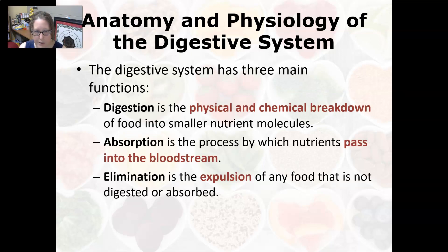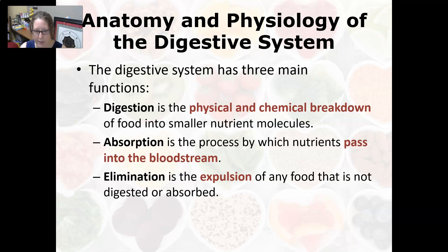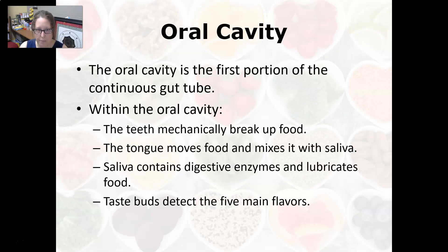There are three main functions of the digestive system. Digestion is the primary one — it's the physical and chemical breakdown of food into smaller nutrient molecules. Physical digestion involves chewing in the mouth, while chemical breakdown involves the acidity of the stomach and enzymes. The second function is absorption — the process by which nutrients pass into the bloodstream through the capillaries surrounding the GI tract. The third function is elimination — the expulsion of any food that is not digested or absorbed.